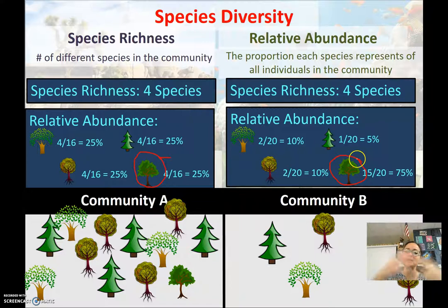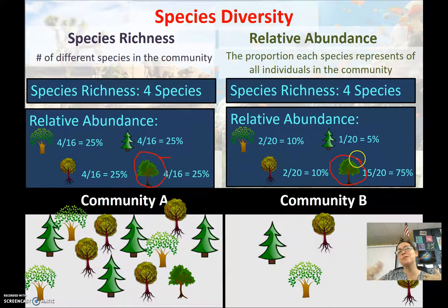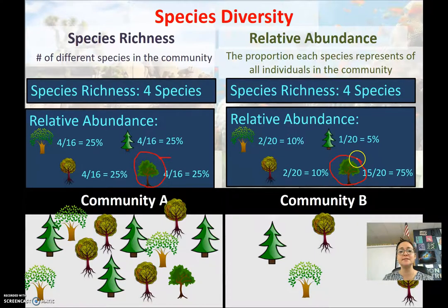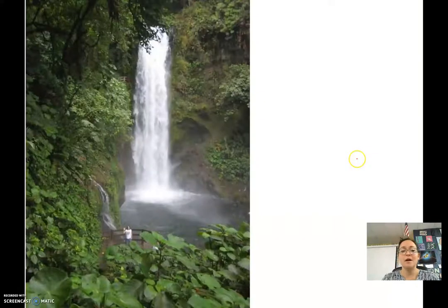When talking about species diversity, species richness matters — more species is better. But relative abundance is also important for the community's stability in the face of disturbances like floods, fires, disease, or humans. The greater the relative abundance across different species, the better.